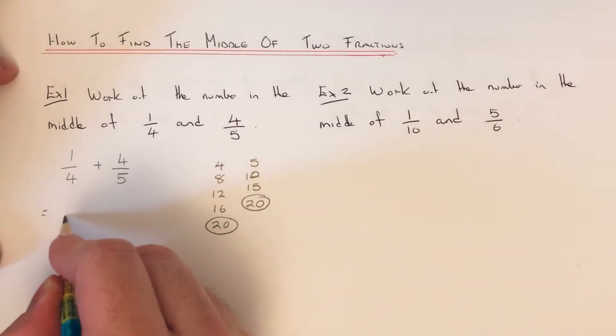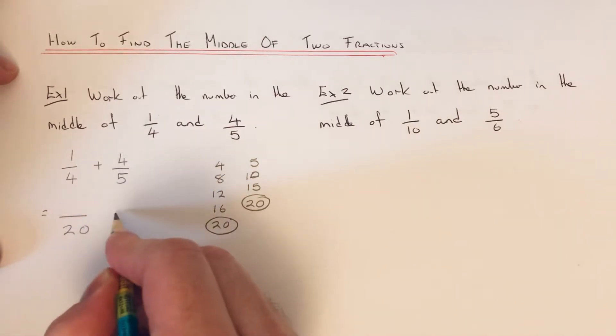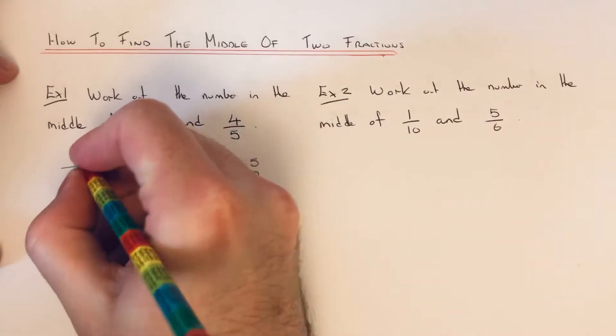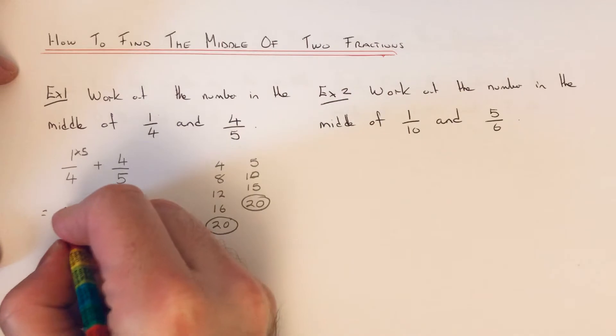So if we convert these to twentieths, four went into twenty one, two, three, four, five, so we need to times the numerator by five. So one times five is five.